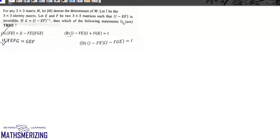Now the other question is, let E and F be two matrices such that I minus EF is invertible, and G is inverse of this matrix. Then we know that G into I minus EF is equal to I minus EF into G, and it'll be equal to I.